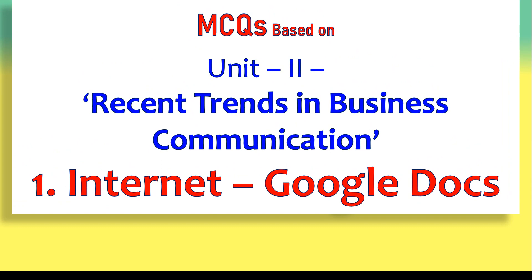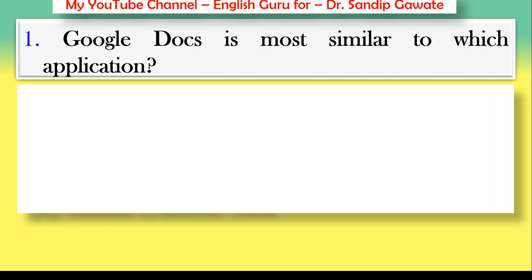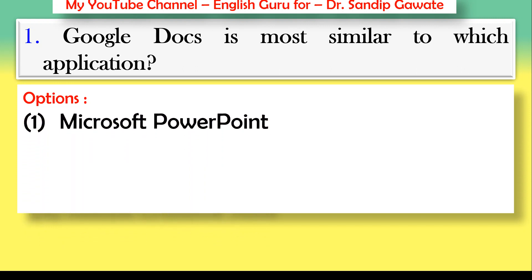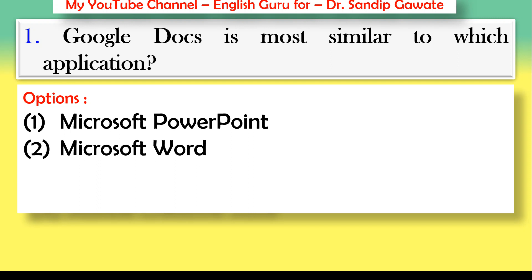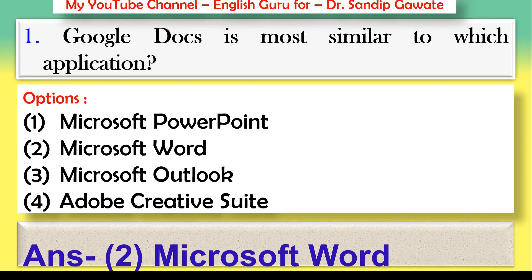Unit number two: Recent Trends in Business Communication. First point: internet tools — Google Docs. Question 1: Google Docs is most similar to which application? Options: Microsoft PowerPoint, Microsoft Word, Microsoft Outlook, Adobe Creative Suite. The correct answer is option number two — Microsoft Word.